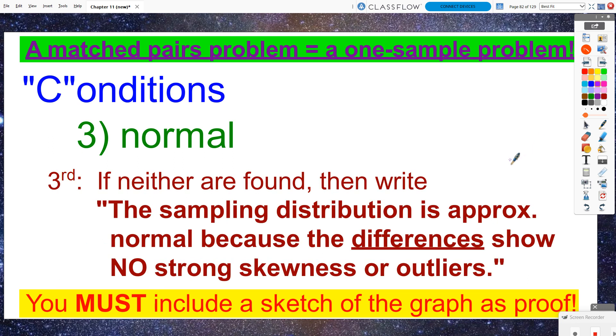So only look at a box plot of those differences. And we need to be on the lookout for strong skewness or outliers. If we don't see either one of those, then we get to state that the sampling distribution is approximately normal because the differences show no strong skewness or outliers. And we will need to provide a sketch of the box plot from our calculator.